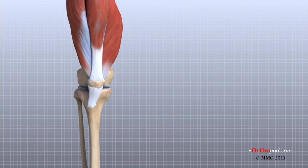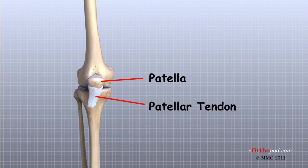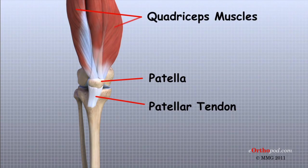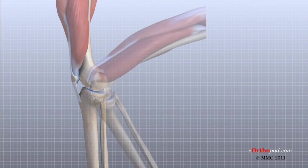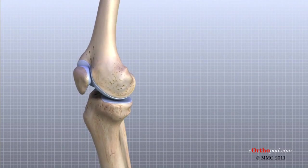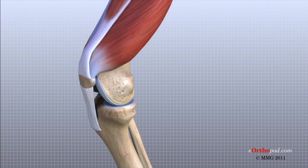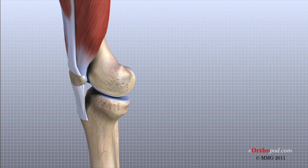The extensor mechanism is the motor that drives the knee joint and allows us to walk. It sits in front of the knee joint and is made up of the patella, the patellar tendon, the quadriceps tendon, and the quadriceps muscles. The four quadriceps muscles in front of the thigh attach to the quadriceps tendon. When these muscles contract, they straighten the knee joint, such as when you get up from a squatting position. The patella works like a fulcrum, increasing the force exerted by the quadriceps muscles as the knee straightens.